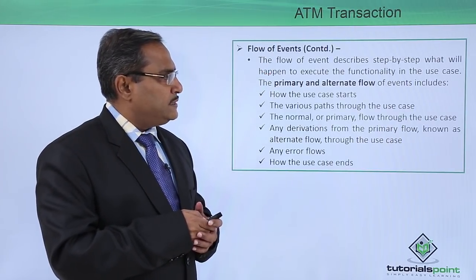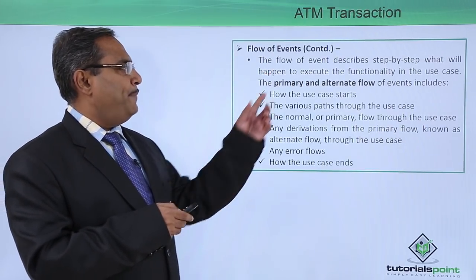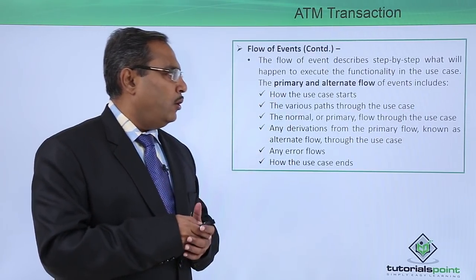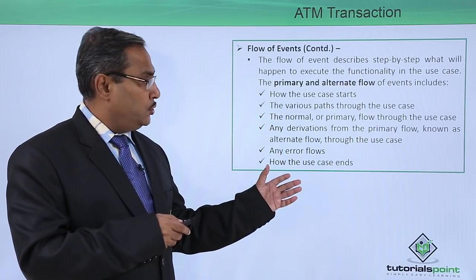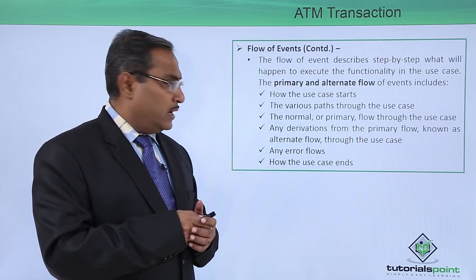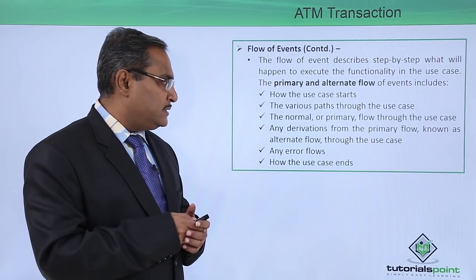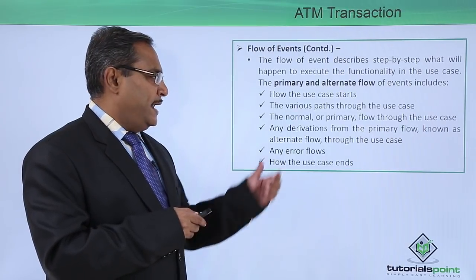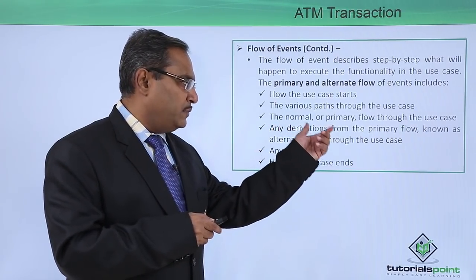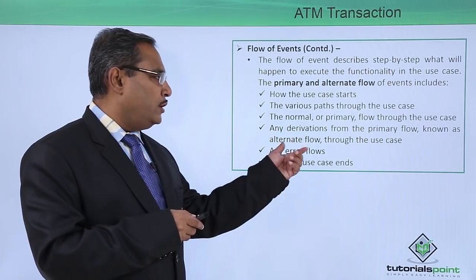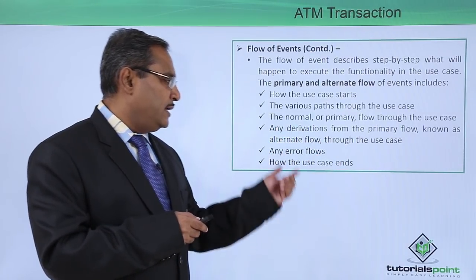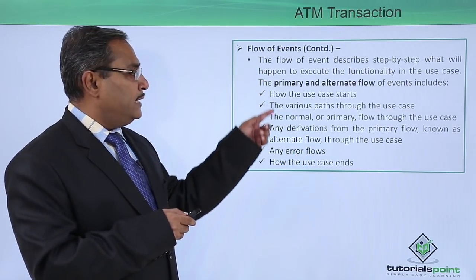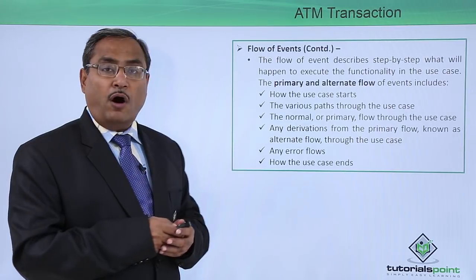The flow of events describes step by step what will happen to execute the functionality in the use case. The primary and alternate flow of events includes how the use case starts, the various paths through it, the normal or primary flow, any derivations known as the alternate flow, any error flows, and how the use case ends.